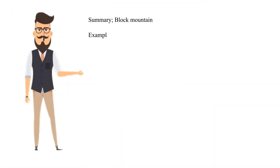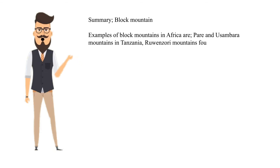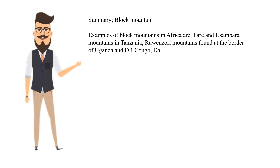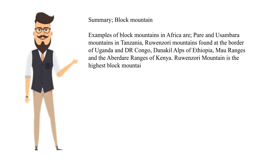Summary: Block Mountains. Examples of block mountains in Africa are: Pare and Usambara Mountains in Tanzania; Rwenzori Mountains found at the border of Uganda and D.R. Congo; Danakil Alps of Ethiopia; Mau Ranges and the Aberdare Ranges of Kenya. Rwenzori Mountain is the highest block mountain in Africa.